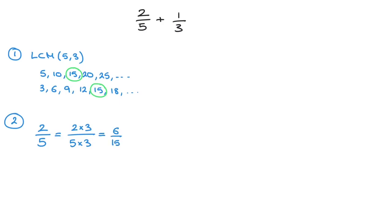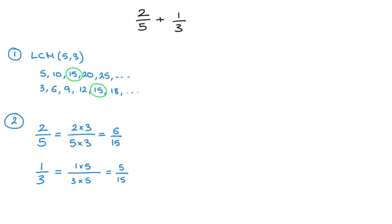We now do the same thing for the second fraction, which was 1 over 3. Now to turn 3 into 15, we look at our list of multiples again. We can see that 15 is the fifth multiple of 3. So to turn 3 into 15, I need to multiply it by 5. But since I've done that on the denominator, I have to do the same on the numerator, so I write 1 times 5 there. That's now equal to 5 over 15, and that's our second step done.